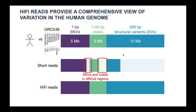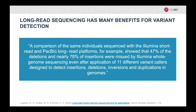Even though short reads are commonly used for single nucleotide variant and indel detection, they still miss a portion of them, especially the ones located in difficult-to-map regions of the genome. In a recent publication in Nature Review Genetics by Lockston and colleagues, they concluded that short reads missed 47% of the deletions and almost 78% of the insertions, even after applying 11 different variant callers specifically designed to detect these variant types in short-read data.